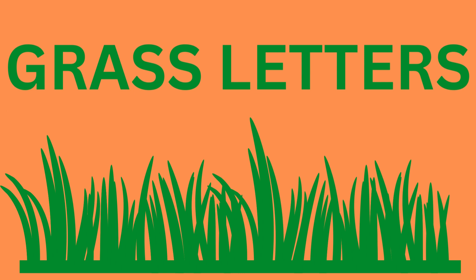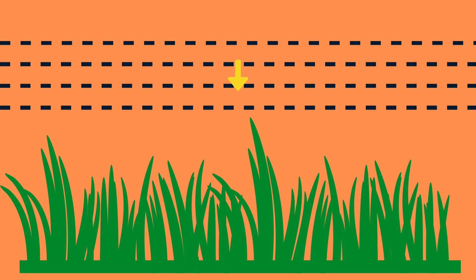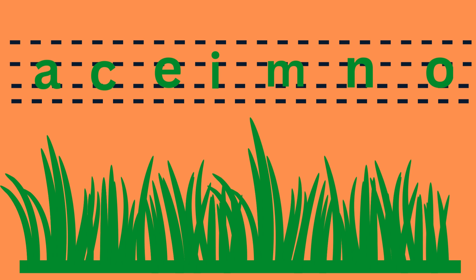Grass Letters. There are fourteen grass letters. They start from the second line and end at the third line. These are A, C, E, I, M, N, and O.